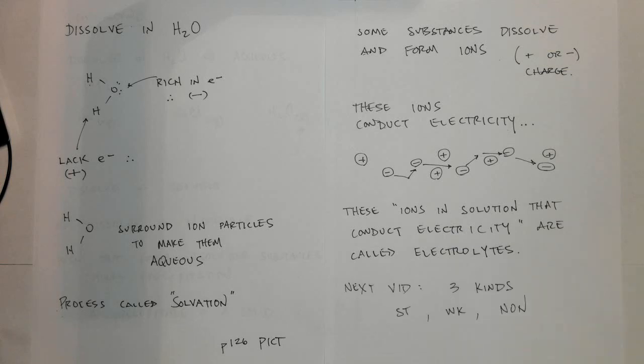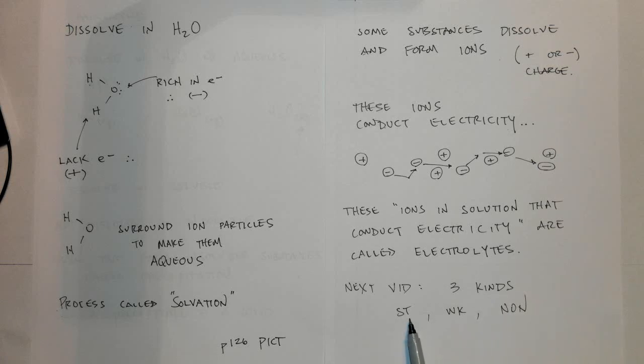In the next video, we'll look at three different kinds of electrolytes. These things that conduct electricity or only sort of conduct electricity or don't conduct electricity. We classify them as strong electrolytes if they conduct a lot of electricity, weak electrolytes if they don't conduct electricity very much or don't have a lot of positive and negatives, and non-electrolytes if they don't conduct electricity at all.